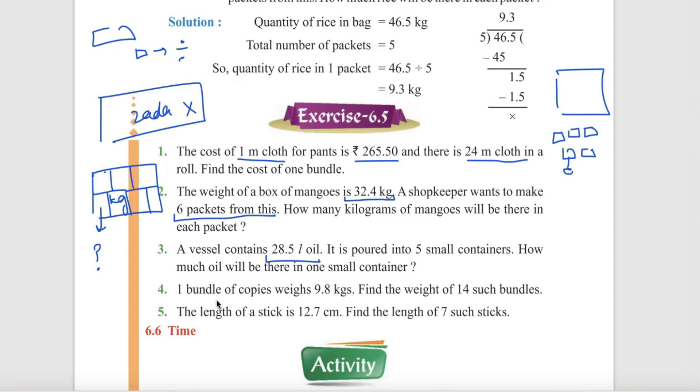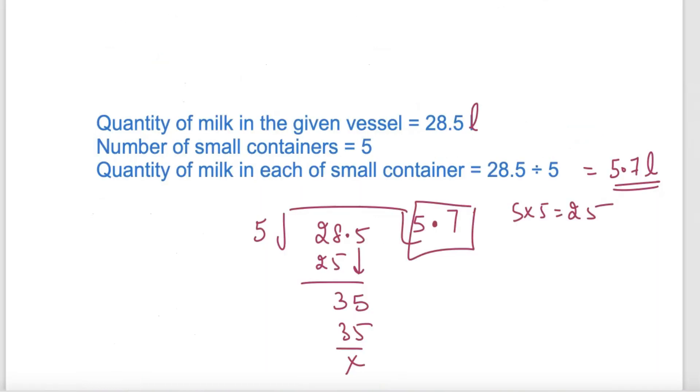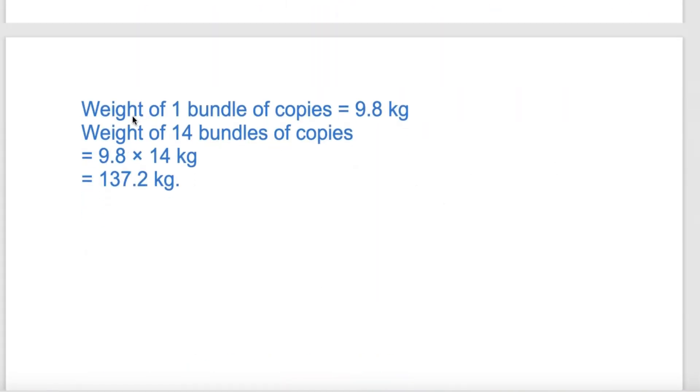1 bundle of copies weighs 9.8 kg. Find the weight of 14 bundles. 14 times 9.8. Multiply this. Now the decimal is 1 digit, so place the decimal and the answer is 137.2 kg.